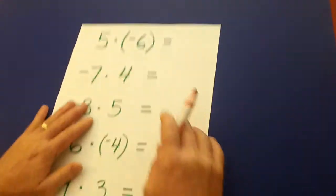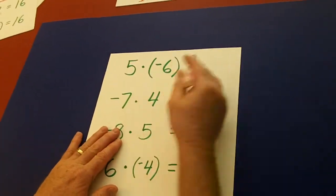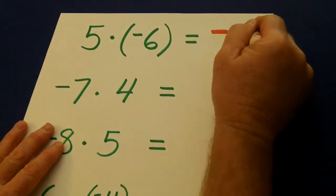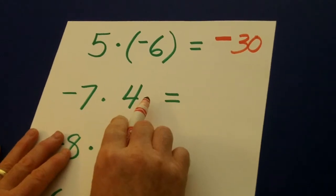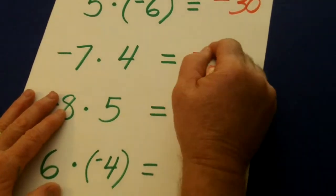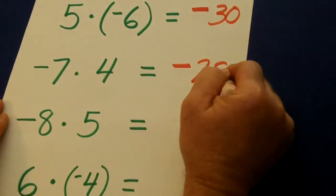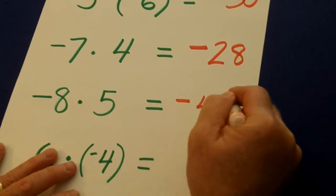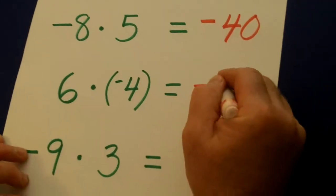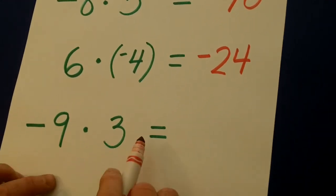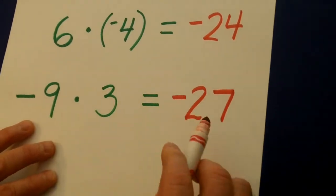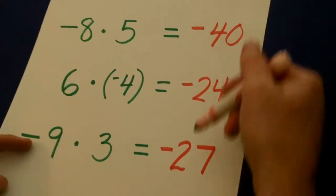So let's see how that works. The signs are different, so we're going to have a negative. 5 times 6 is 30 — the signs are different, so it's negative. 7 times 4 is 28. The signs are different — negative 40. The signs are different — negative 24. The signs are different — negative 27. In all of these, they had different signs, so their answers are all negative.